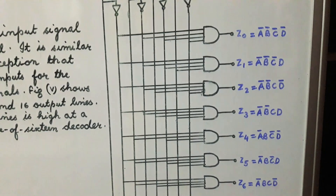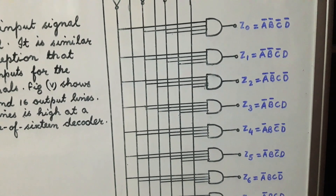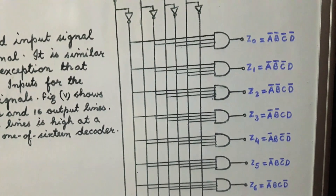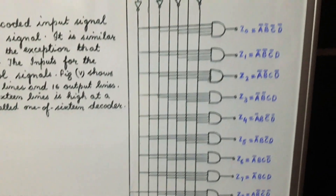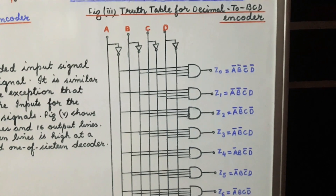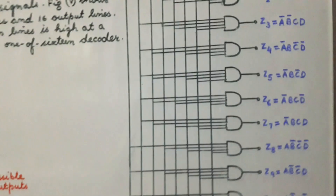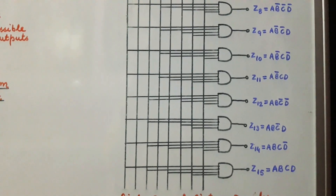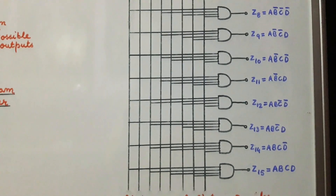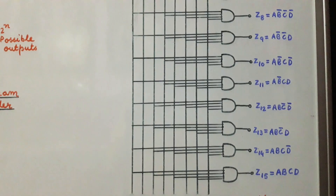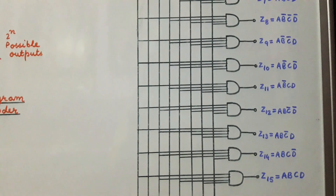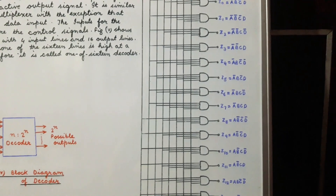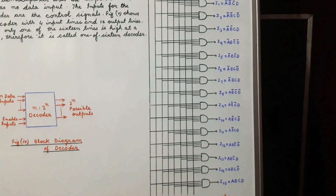This is the truth table for the decimal to BCD encoder. Now let us see what a decoder is. A decoder decodes the coded input signal into an active output signal. It is similar to a demultiplexer with the only exception that it has no data inputs — the inputs for the decoder are the control signals. The block diagram of a decoder is shown in figure 4. From here we find that it has n number of data inputs and 2 to the power n number of possible outputs.